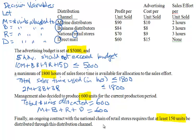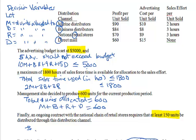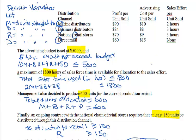Finally, we are told that at least 150 units should go to retail, so R must be greater than or equal to 150. We have now figured out all the constraints, and we should add a non-negativity constraint to assure that all variables remain non-negative: M, B, R, D greater than or equal to 0.